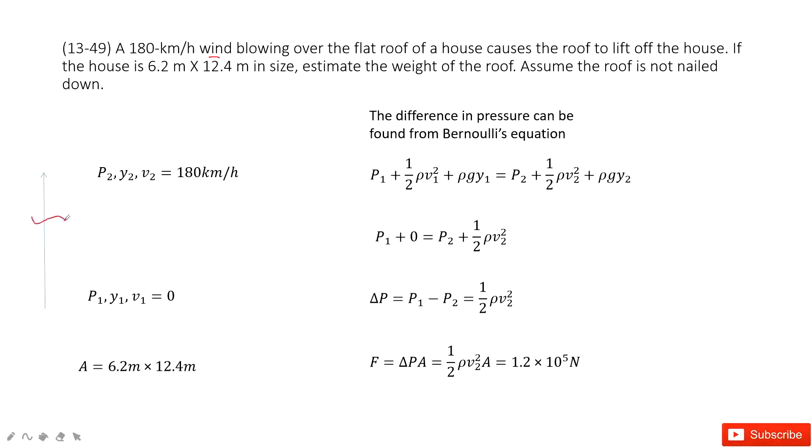So we can consider this is a roof and this is the initial position at the bottom inside. This is outside of the roof, position 2. So at the position inside, we have pressure p1, y1, v1 equal to 0 because there is no wind. At position 2, we have p2, y2, v2.